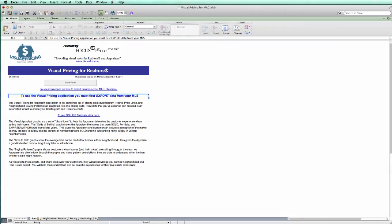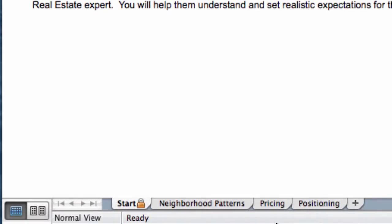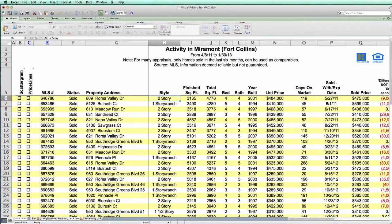Now we've already read in the export files. To create our scattergram we need to go to the pricing tab. Once we select the pricing tab we see the MLS dataform. As you're probably aware from watching the other videos, the scattergram is not created automatically for you.